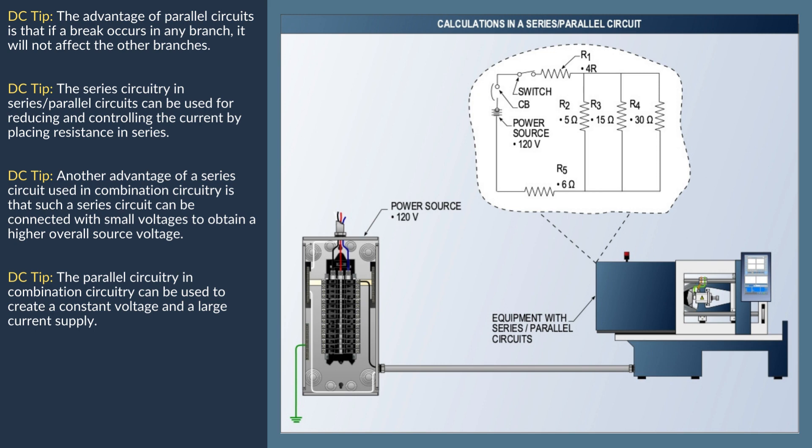In Step 1, finding total voltage ET: ET (total voltage) equals IT (total amperage) multiplied by RP (total resistance). Based on this formula, ET equals 9 amps multiplied by 13.33 ohms, which equals 120 volts, rounded up.